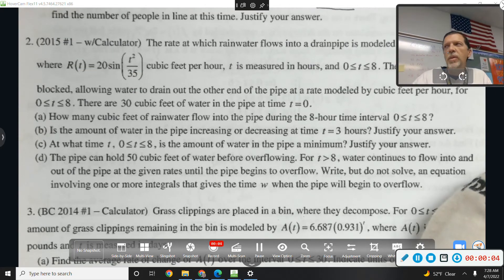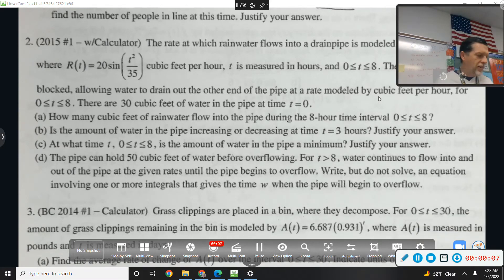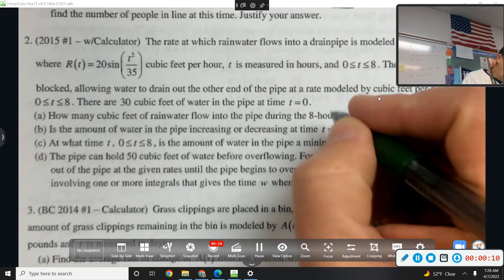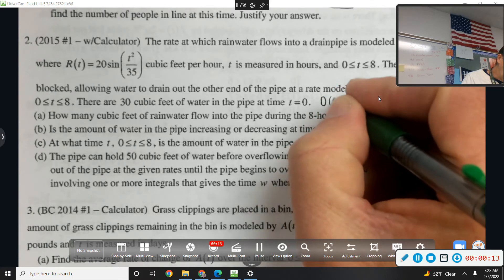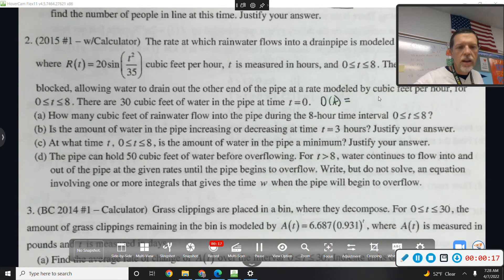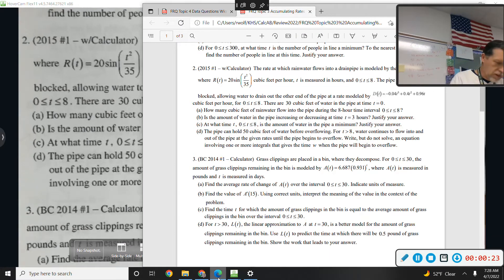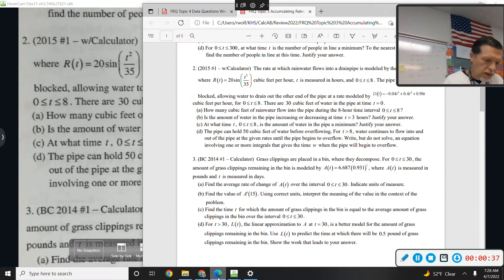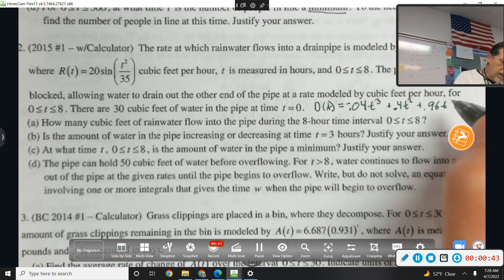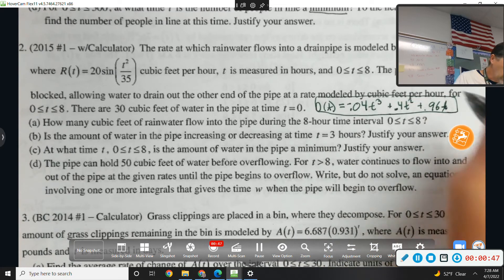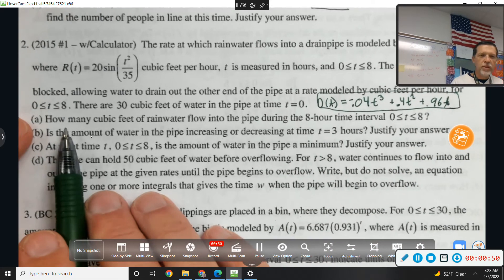Alright, so let's do number 3. But before we do number 3, we need to see the correction for number 2. There's a drain rate that was somehow left off. D of t equals negative 0.04t cubed, plus 0.4t squared, plus 0.96t. I don't know how that happened. I apologize. Let's kind of briefly look through 2, and then we'll actually do 3.